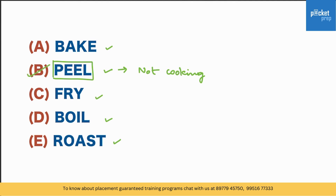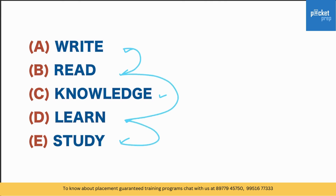Here we have: write, read, knowledge, learn, study. It's very clear — we do writing, reading, learning, and studying in order to acquire knowledge. Knowledge is something unique with respect to the other words, therefore knowledge is the odd one out.